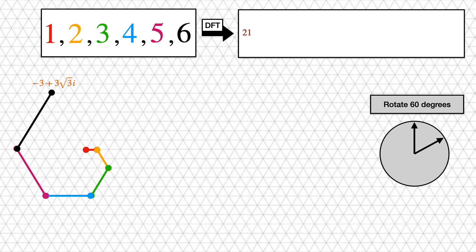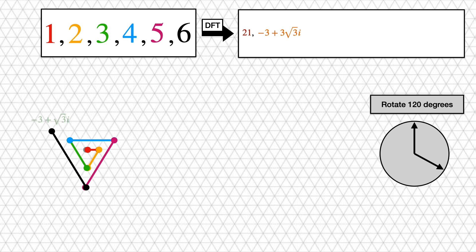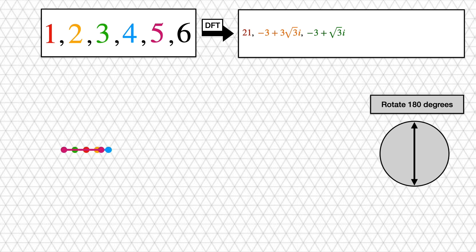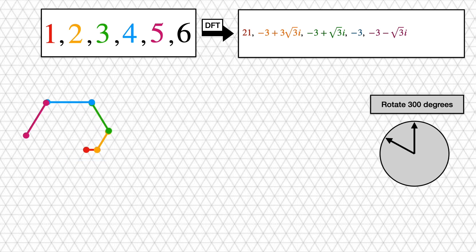This ends up at the point −3 + 3√3·i. Now we rotate 120 degrees and end up at −3 + √3·i. For 180 degrees, each segment is rotated 180 degrees with respect to the previous one, and we end up at −3 — a real number because we never left the real line. For 240 degrees we get something similar to before but inverted, ending at −3 − √3·i. And the last one at 300 degrees is very much the same as 60 except upside down, ending at −3 − 3√3·i. So the DFT of 1, 2, 3, 4, 5, 6 is: 21, −3 + 3√3·i, −3 + √3·i, −3, −3 − √3·i, −3 − 3√3·i.